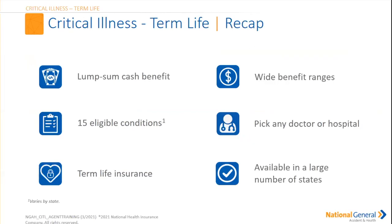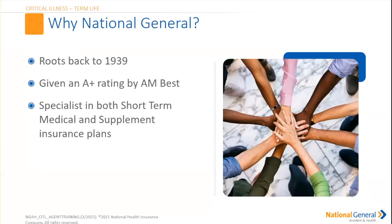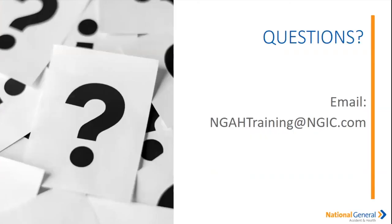Quick recap: critical illness offers a lump sum cash payment for 15 eligible conditions with term life insurance, a wide benefit range, any hospital or doctor, available in a large number of states. Why National General? Our roots go back to 1939. We've been given an A-plus rating by AM Best. We specialize in both short-term medical and supplemental insurance plans. Please email me at NGAHtraining@NGIC.com for a copy of this presentation. Thank you all — have a great remainder of your day, see you next time.